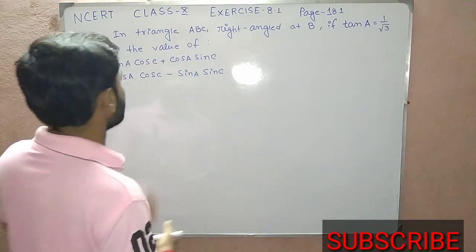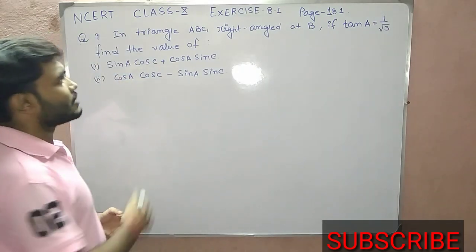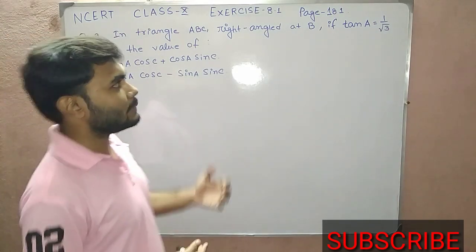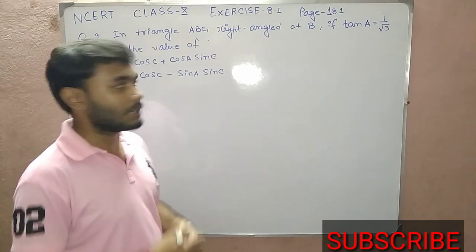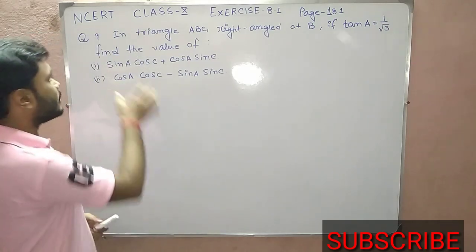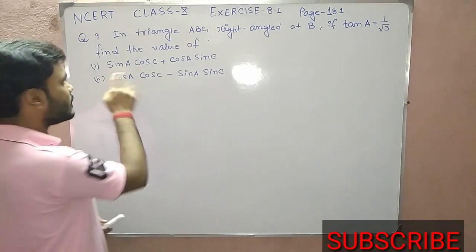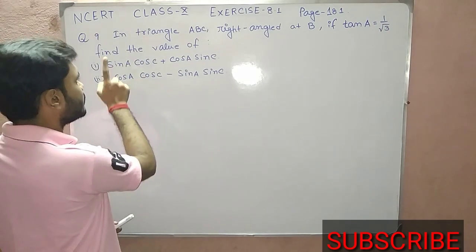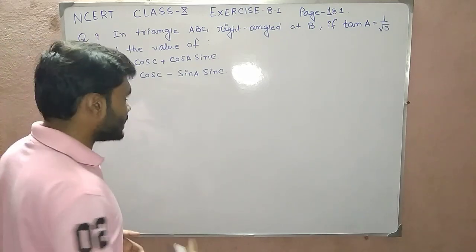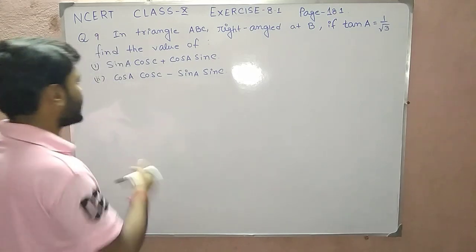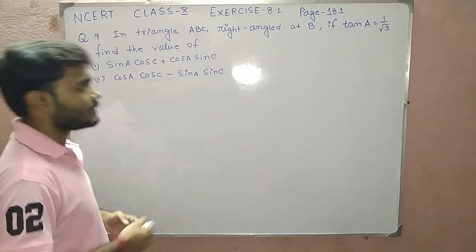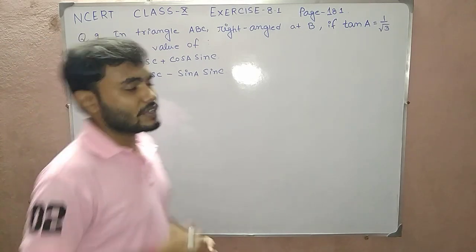So what is the question? It is given: in triangle ABC, right angle at B, if the value of tan A is 1 by root 3, then we have to find out the value of two things. First: sin A into cos C plus cos A into sin C. Second: cos A into cos C minus sin A into sin C.